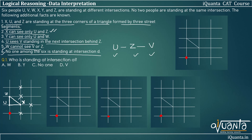X is placed here. We know U, Z, V must be in a straight line, with V beyond Z, so V is placed here. Using the third condition — Y can see only U and W — there is no particular valid place for Y in this arrangement. From various positions, Y cannot see both U and W simultaneously while excluding others. So we cannot place all six people U, V, W, X, Y, Z satisfying all the given conditions. This arrangement is eliminated.